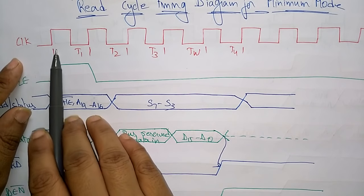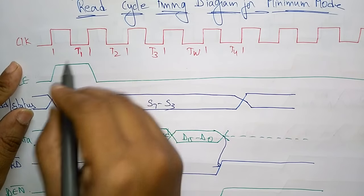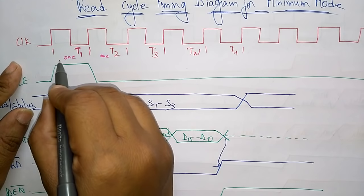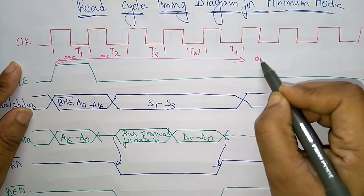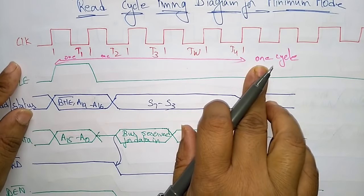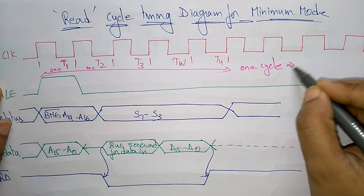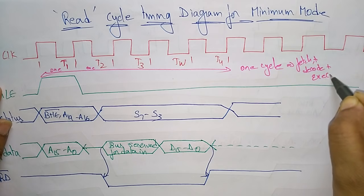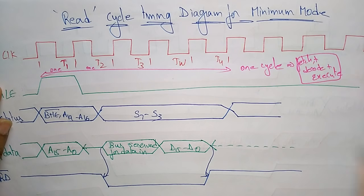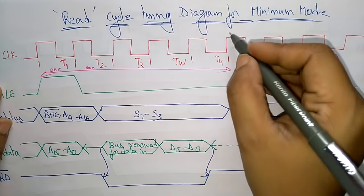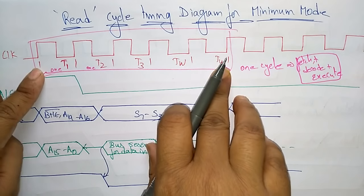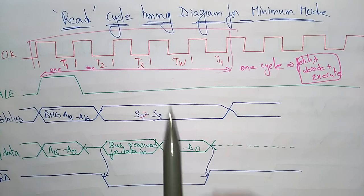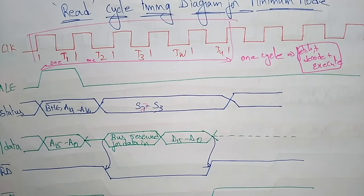So this is the clock pulse we are giving. Total 4 pulses will be there, and a complete 4 pulses we call it as one cycle. In one cycle, one operation will be performed — meaning the fetch, decode, and execute. Fetching the data, decoding the data, and executing the operation — everything will be done in one timing cycle. So one timing cycle has 4 clock pulses, including waiting time.